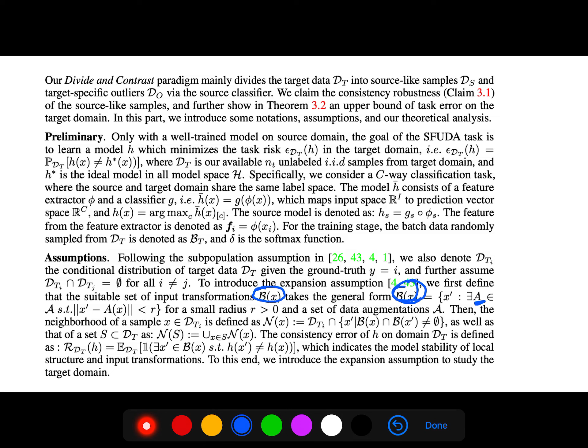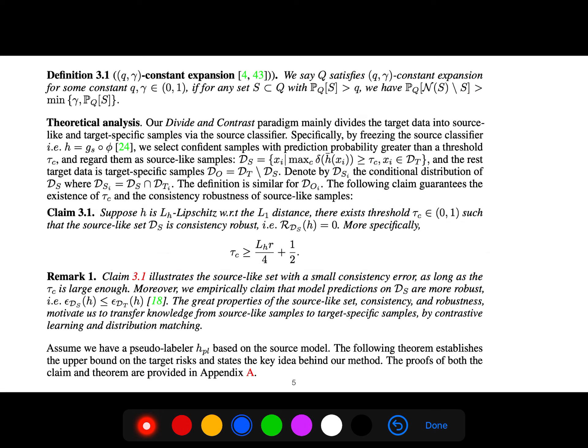Then the neighborhood of a sample x is defined using these boxes. With (q, gamma) constant expansion, we say q satisfies constant expansion for some constant if for any set we have this probability greater than minimum of gamma and p.